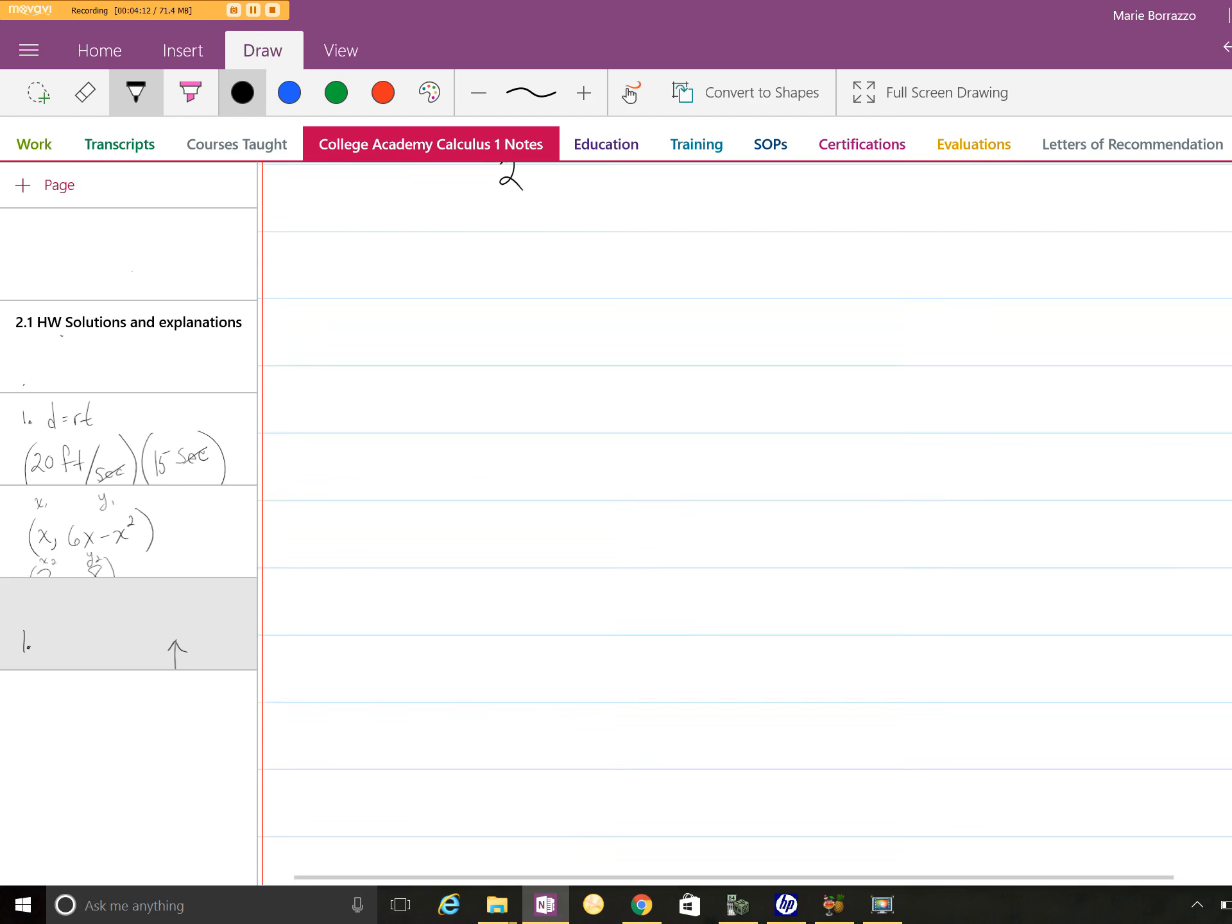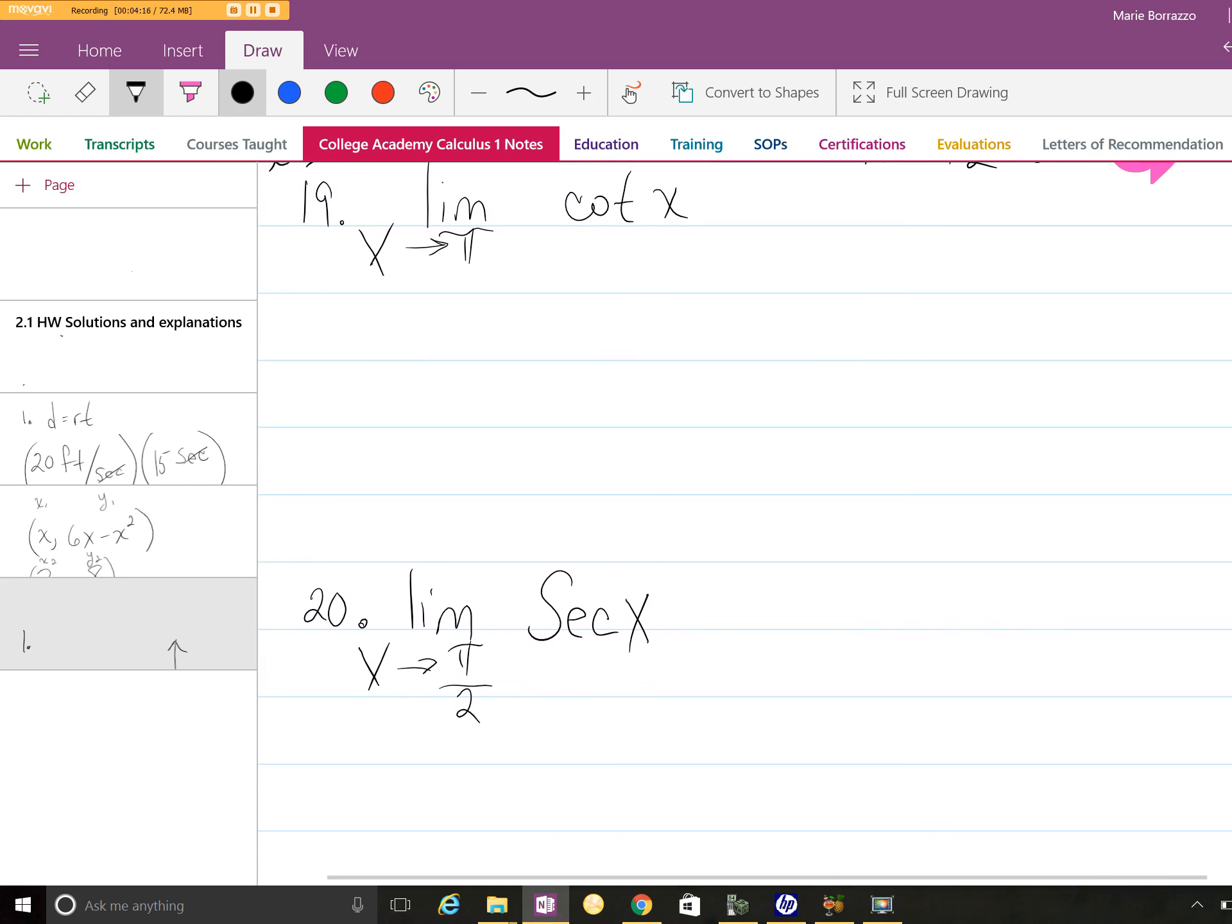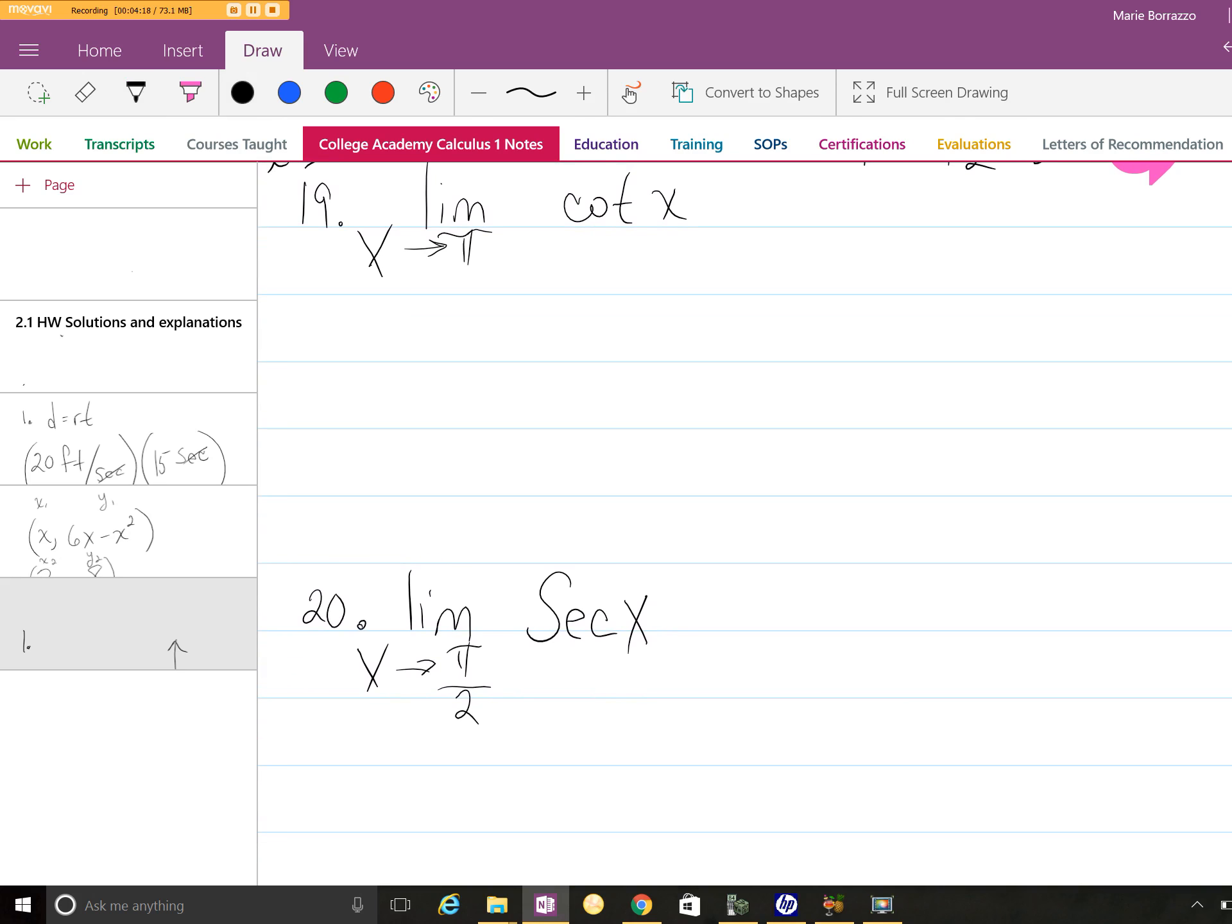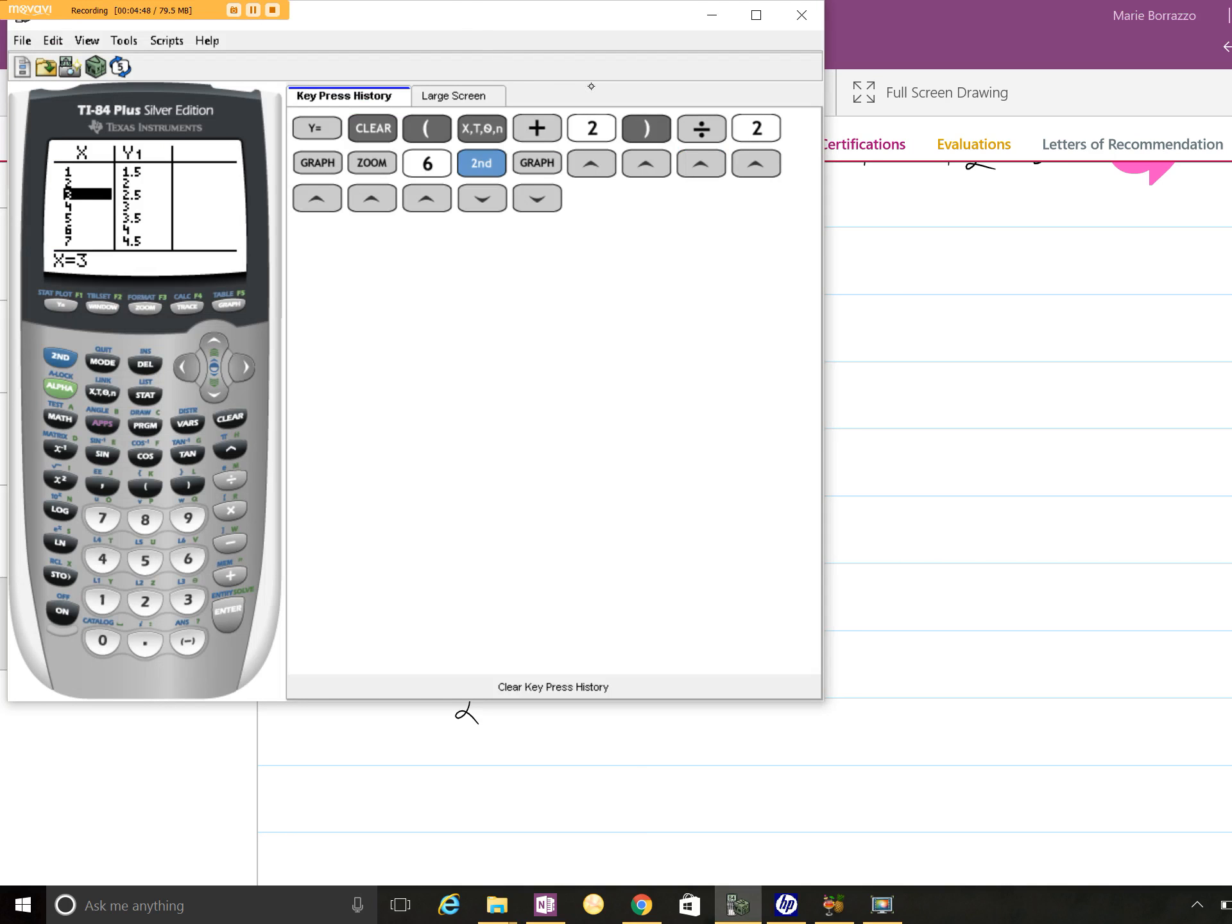Alright, let's take a look at number 19. Number 19, we're going to look at it graphically. Since we're looking at it as x approaches π, we're then going to look at it from x approaches π from the left and as x approaches π from the right. And so you're going to find that this does not exist. So let's take a look at it graphically and make some sense out of it.